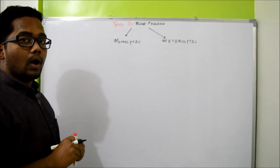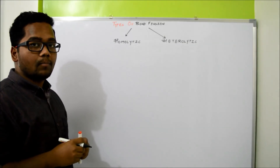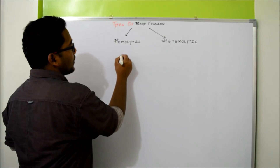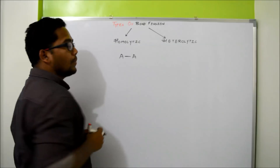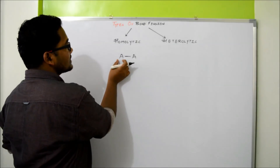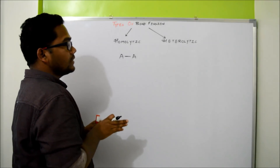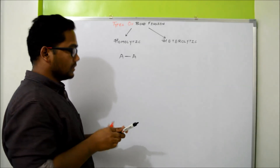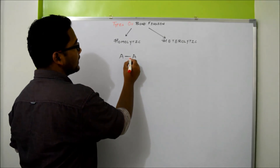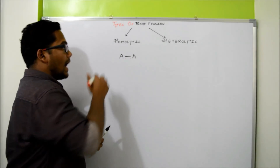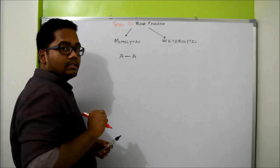We will discuss one by one the example of homolytic bond fission and heterolytic bond fission. Suppose you are having a bond between a molecule where there is an A atom bonded to an A atom. In organic chemistry, the type of bond you consider is a covalent bond. Covalent bond is formed by equal sharing of electrons, and every bond needs two electrons.